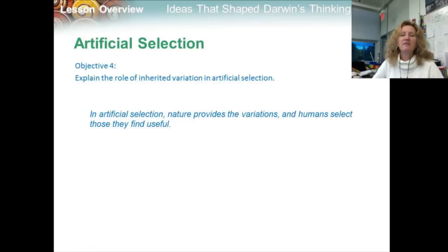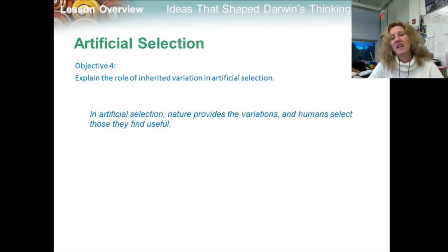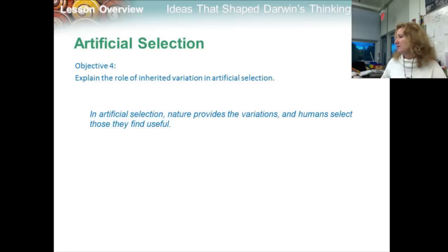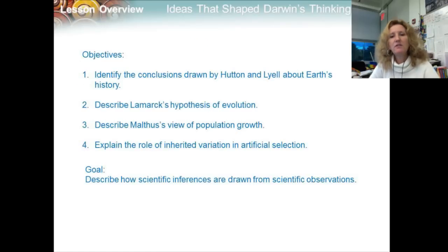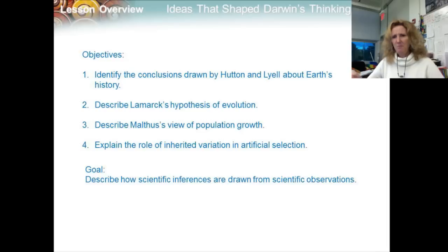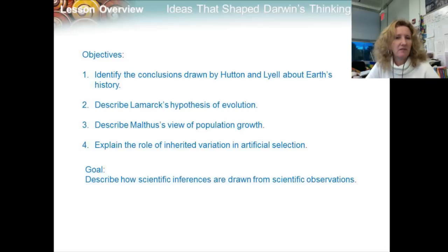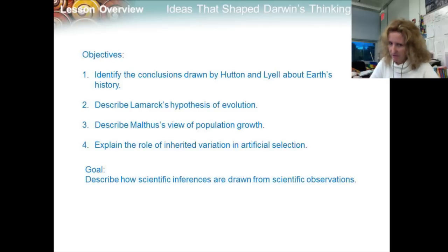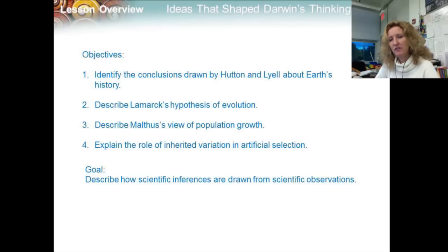Objective four: in artificial selection, nature provides the variations, and humans select those they find most useful. To reiterate our objectives: identify the conclusions drawn by Hutton and Lyell about Earth's history — don't forget deep time and uniformitarianism. Describe Lamarck's hypothesis of evolution — he had some good points and some bad points. Describe Malthus's view of population growth. And explain the role of inherited variation in artificial selection — things that breeders do. Our goal was to describe how scientific inferences are drawn from scientific observations.